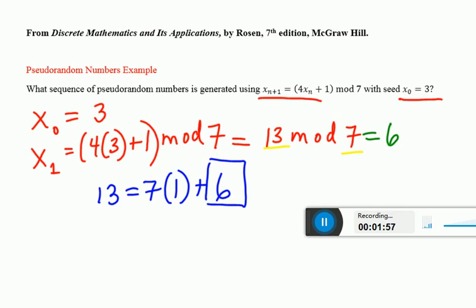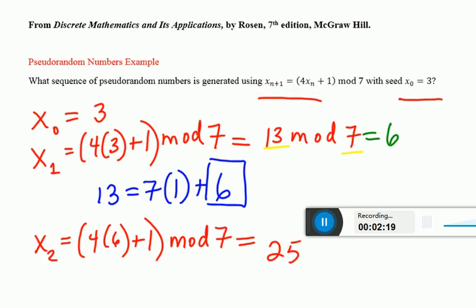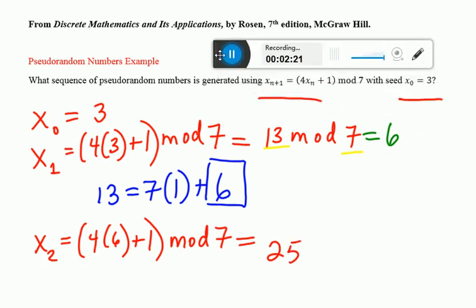Now I'm going to use x_1 to figure out what x_2 is using the same procedure. 4 times 6 plus 1, that's my formula. I need to mod 7 that number, and that's simply 25 mod 7.